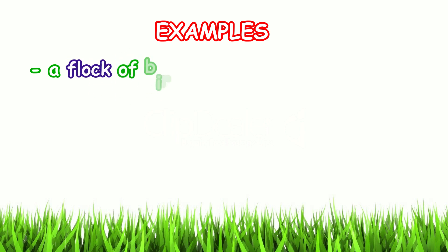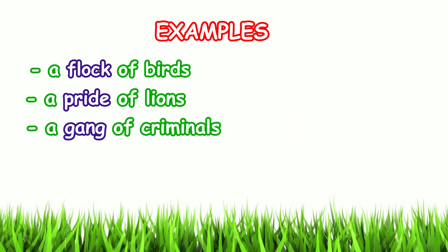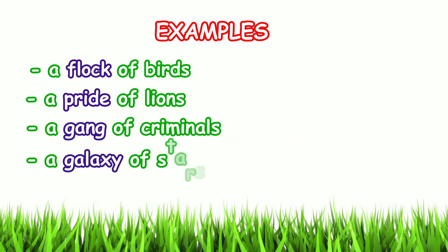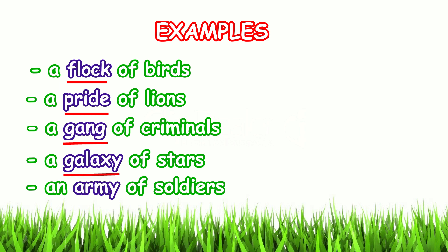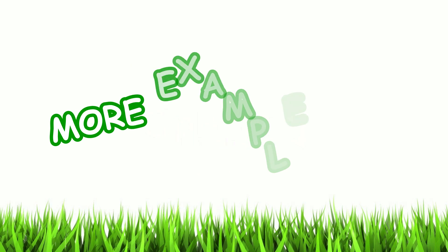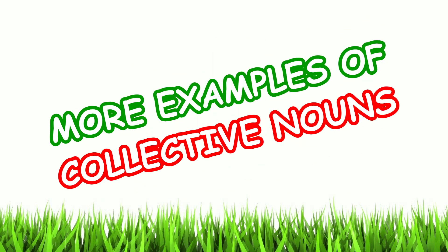Consider the examples: a flock of birds, a pride of lions, a gang of criminals, a galaxy of stars, an army of soldiers. The underlined words — flock, pride, gang, galaxy, and army — are the collective nouns. Let's consider some more examples of collective nouns.